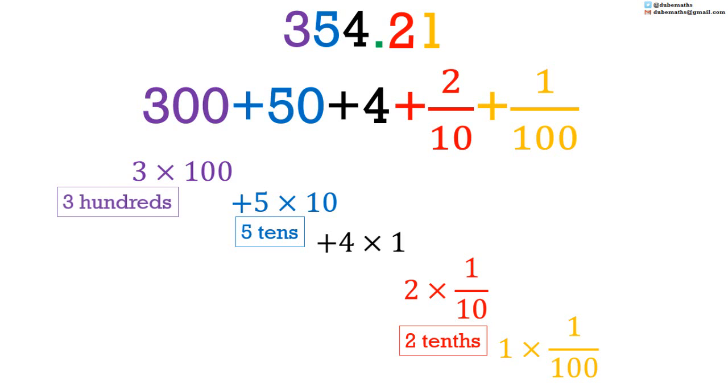Similarly, we have hundreds. 3 multiplied by 100 is hundreds. And 1 multiplied by 1 over 100 is 1 hundredth: H-U-N-D-R-E-D-T-H-S.